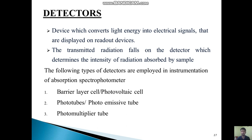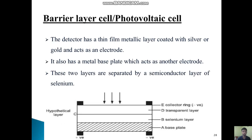The transmitted radiation falls on the detector which determines the intensity of radiation absorbed by the sample. Some detectors are the barrier layer cell or photovoltaic cell, photo tubes or photo emissive tubes, and photo multiplier tubes.